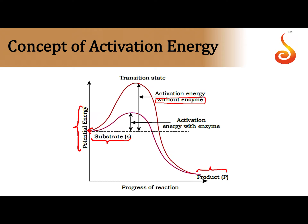Without the enzyme, for the substrate to get converted into the product, it needs an additional input of energy called activation energy. It is asking for more activation energy in the absence of the enzyme, and therefore it will take a longer time for the substrate to reach the transition state — a climax state where it undergoes changes in its bonds and finally transforms into the product.